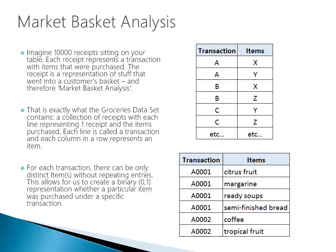We can think of the dataset like this: each transaction is a receipt, and each item is something that was purchased. In my example, receipt A0001 shows a person who bought citrus fruit, margarine, ready soups, and semi-finished bread. The second transaction, A0002, shows a different customer purchasing coffee and tropical fruit. This is how the data typically comes in from business intelligence systems.